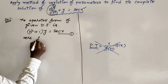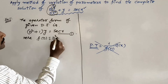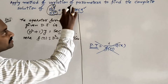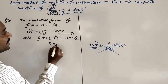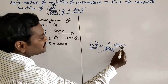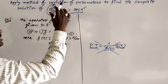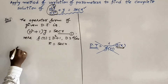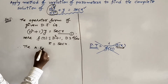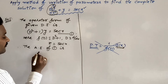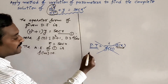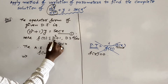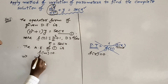Here, f(D) = D² + 1, and capital D is nothing but d/dx. The right-hand side function in the method of variation of parameters is represented as R(x), which equals sec(x). First of all, write the auxiliary equation. The auxiliary equation of equation 1 is f(m) = 0.